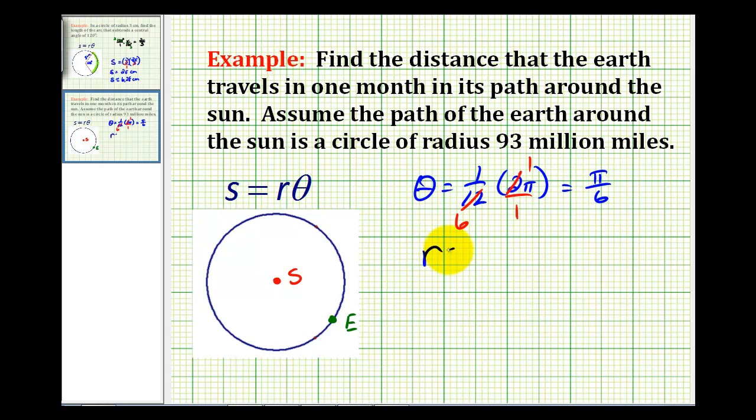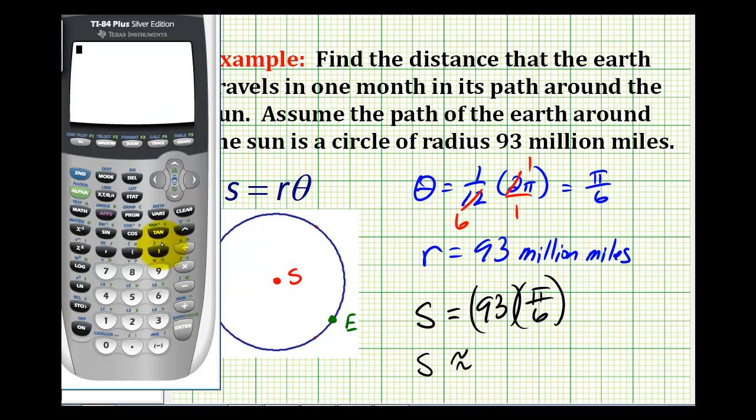And the radius is 93 million miles, and this is all we need to determine the distance the earth travels in one month. It would be the arc length, which is equal to 93 million miles times pi over six radians. Let's go and determine this product on the calculator.